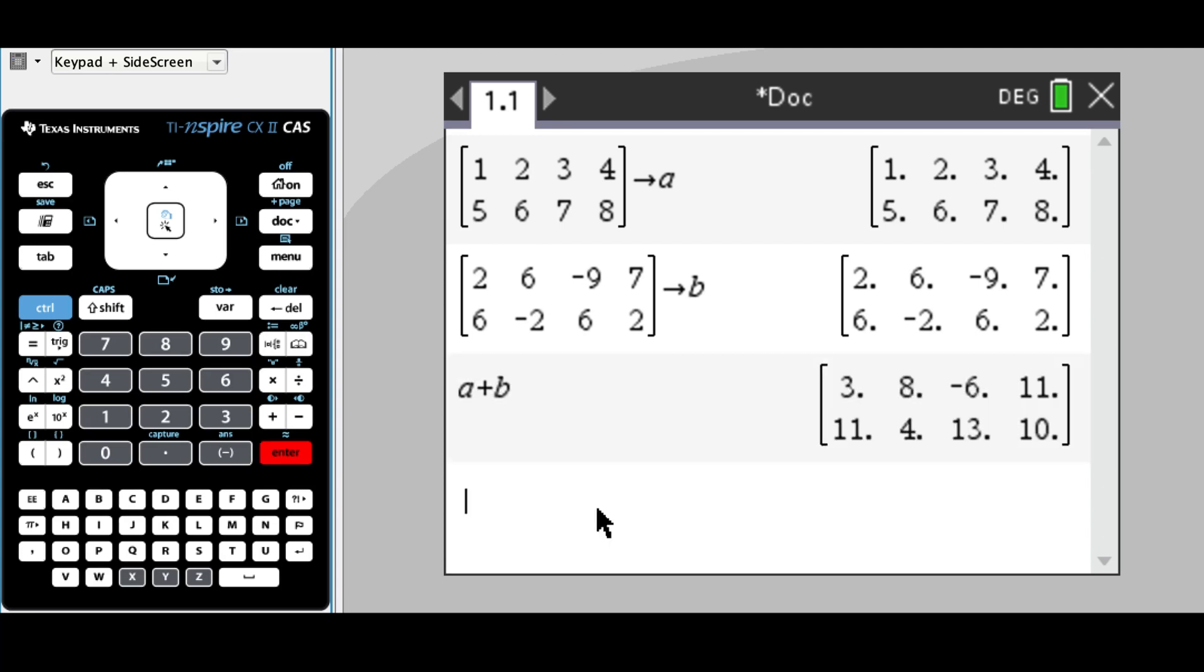If we look at what it's done, it's taken each element, the first element in matrix a, and added it to the first element in matrix b. One plus two is three, two plus six is eight. So addition is just adding up each corresponding element.